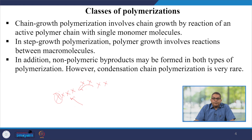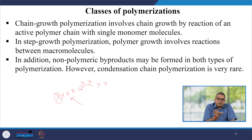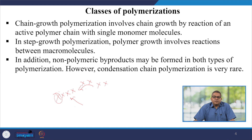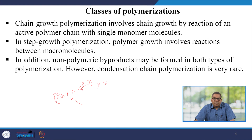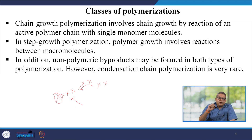This particular polymerization scheme is called chain growth polymerization. Another is step growth polymerization, where polymer growth involves the reaction between macromolecules, so chains can interact with different other chains. Non-polymeric byproducts may be formed in both types of polymerization. The condensative chain polymerization is very rare.